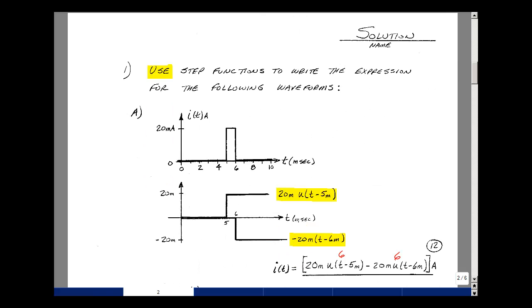In problem number one, we're asked to use step functions to write an expression for the following two waveforms. The first one is a pulse from 0 to 20 milliamps at 5 milliseconds to 6 milliseconds. Now if we use a step function, go from 0 to a value, in this case 0 to 20 milliamps, we could do that with a delayed step of 5 milliseconds, so U(t - 5 ms), but that's just going to give us a step function. I need to neutralize this other part, so I'll just create another step function in the opposite direction, so minus 20 milliamps, but then start that at 6 milliseconds.